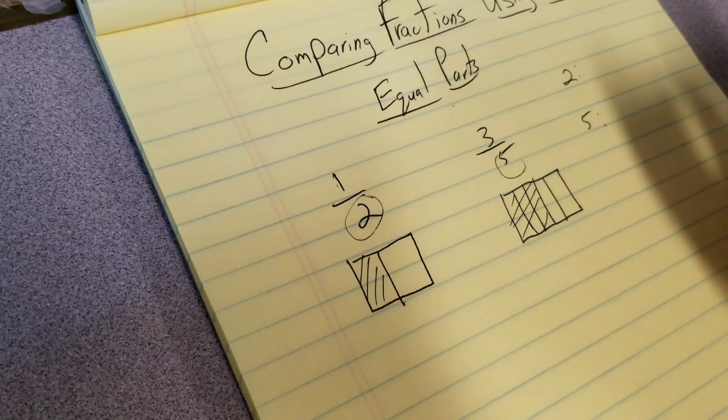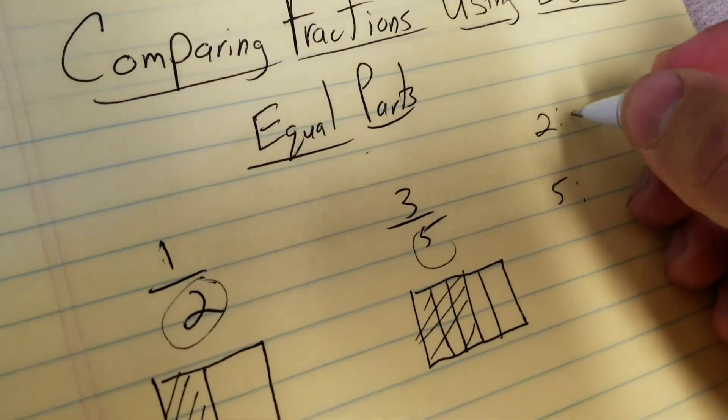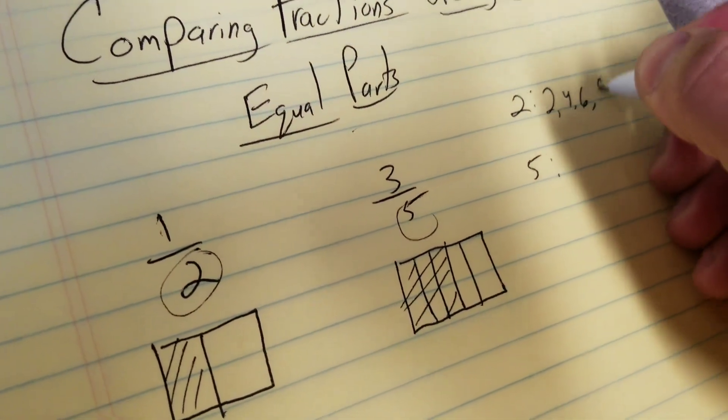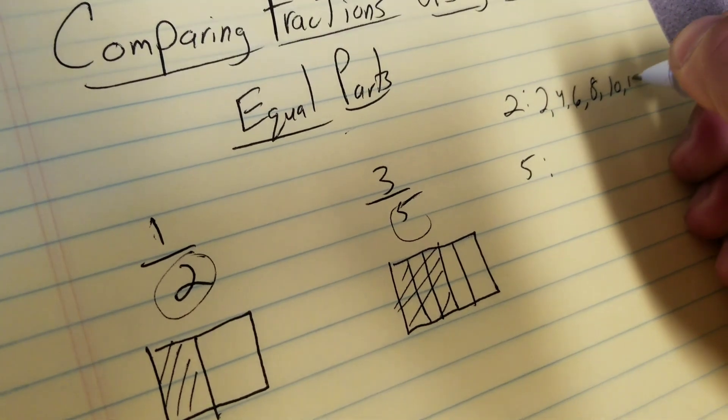So 2, 4, 6, 8, 10, 12—I like to do about six and then stop and check for my next number's multiples.